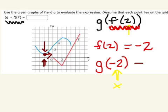So g of negative 2, that y value is a positive 1. So our answer for this composition of functions is positive 1.